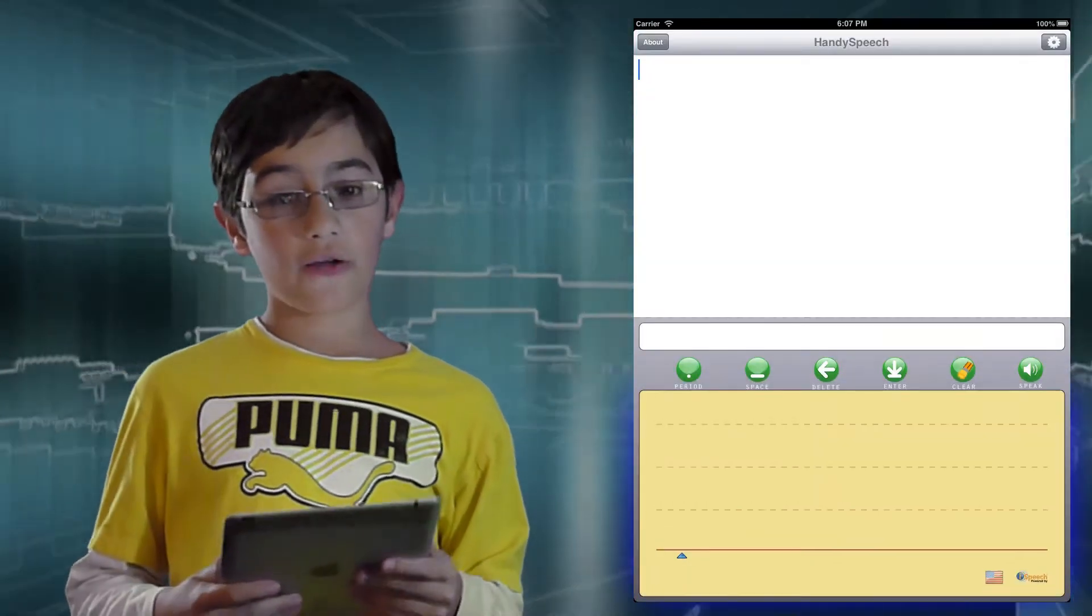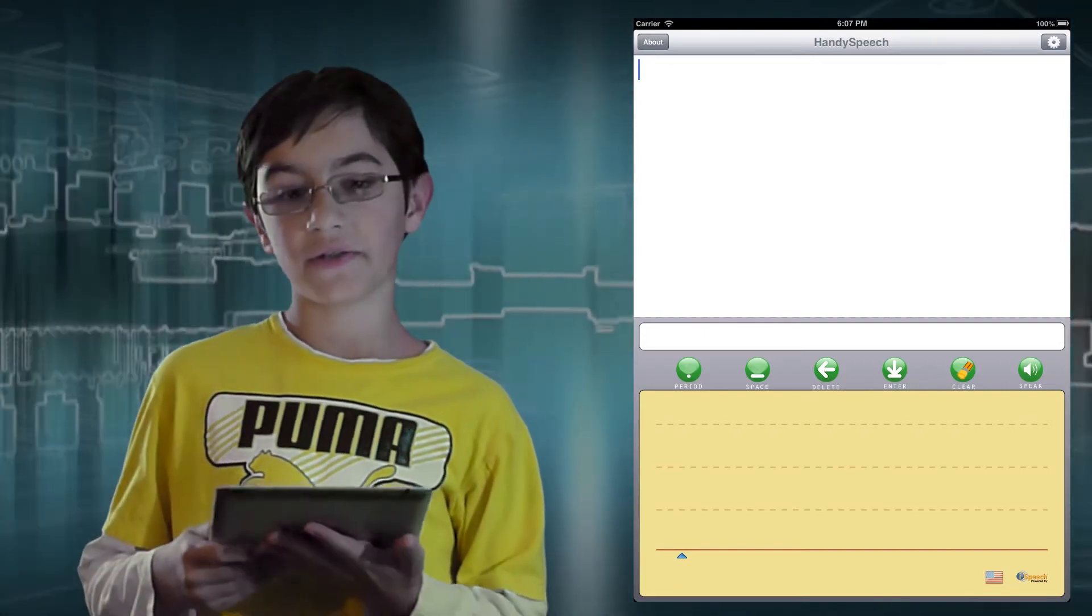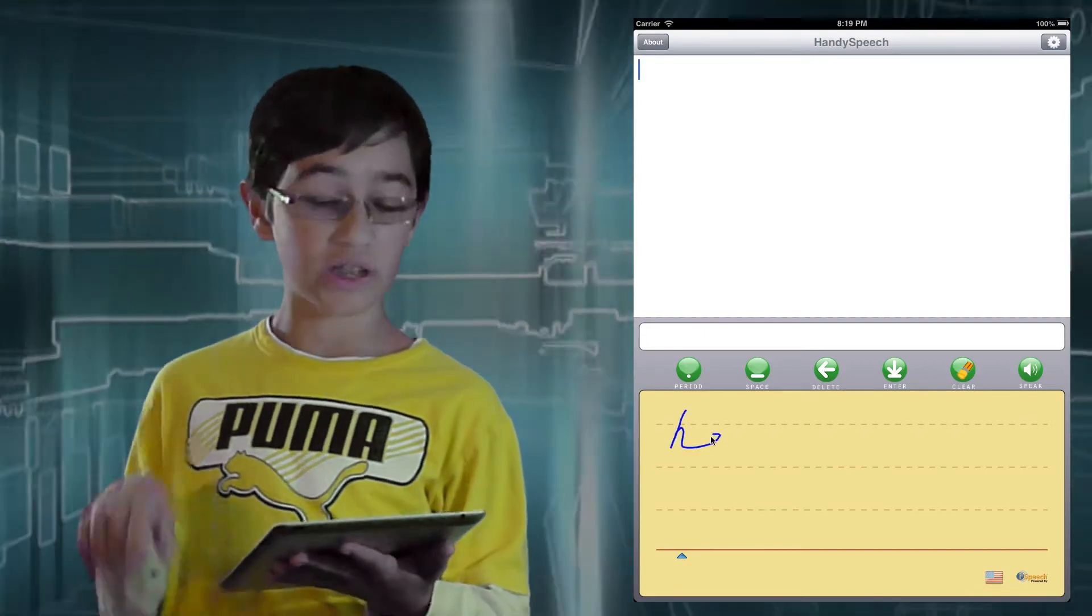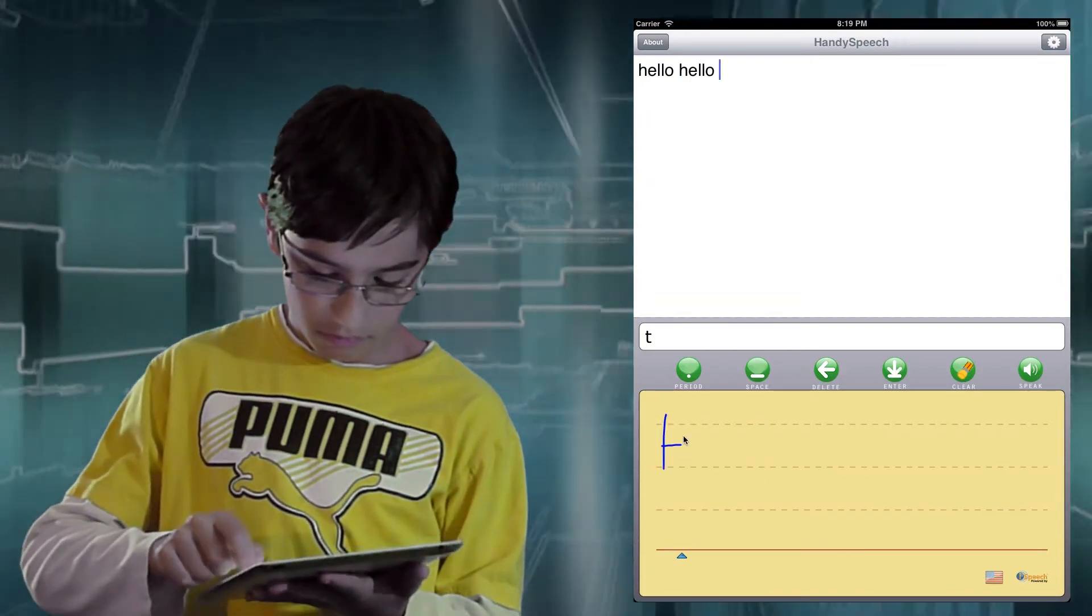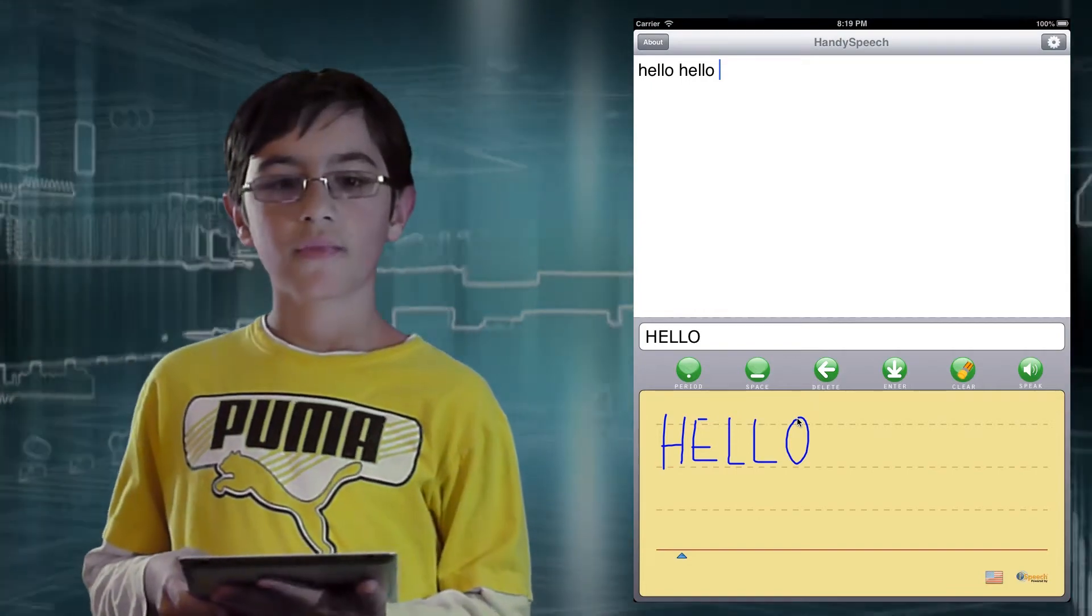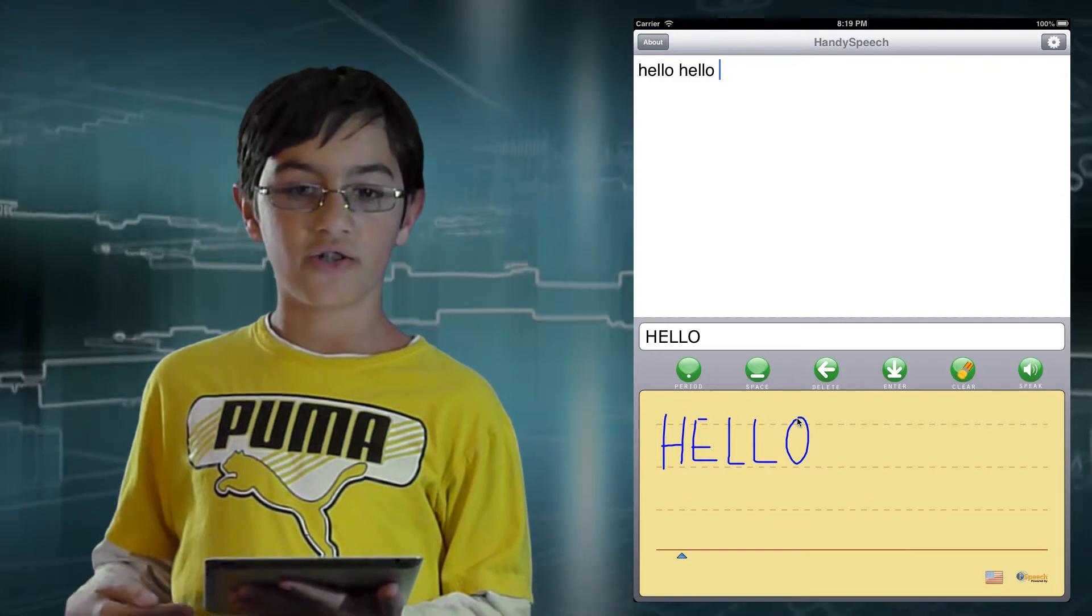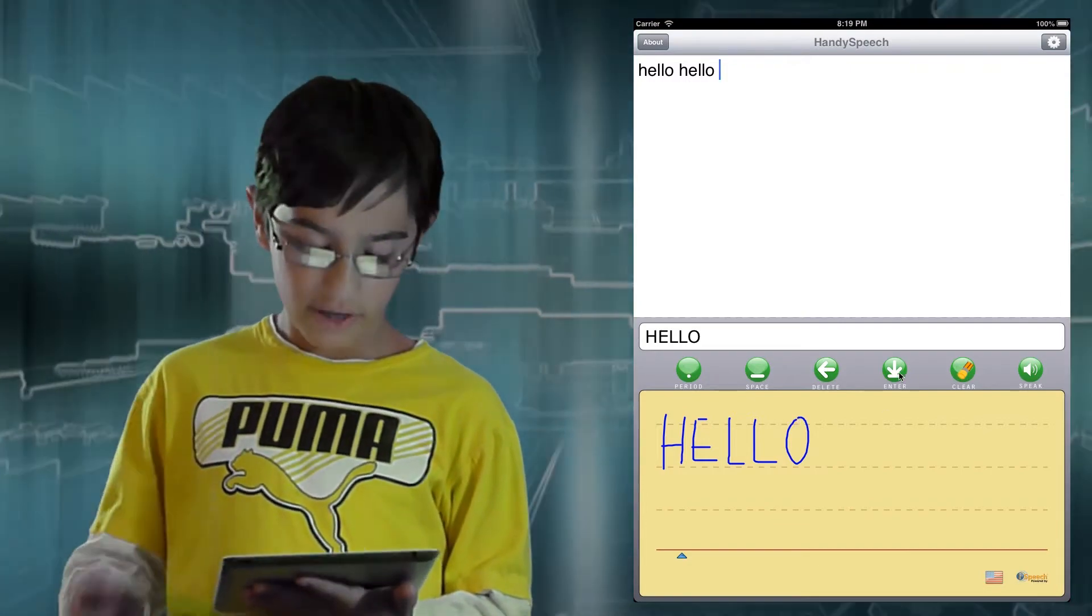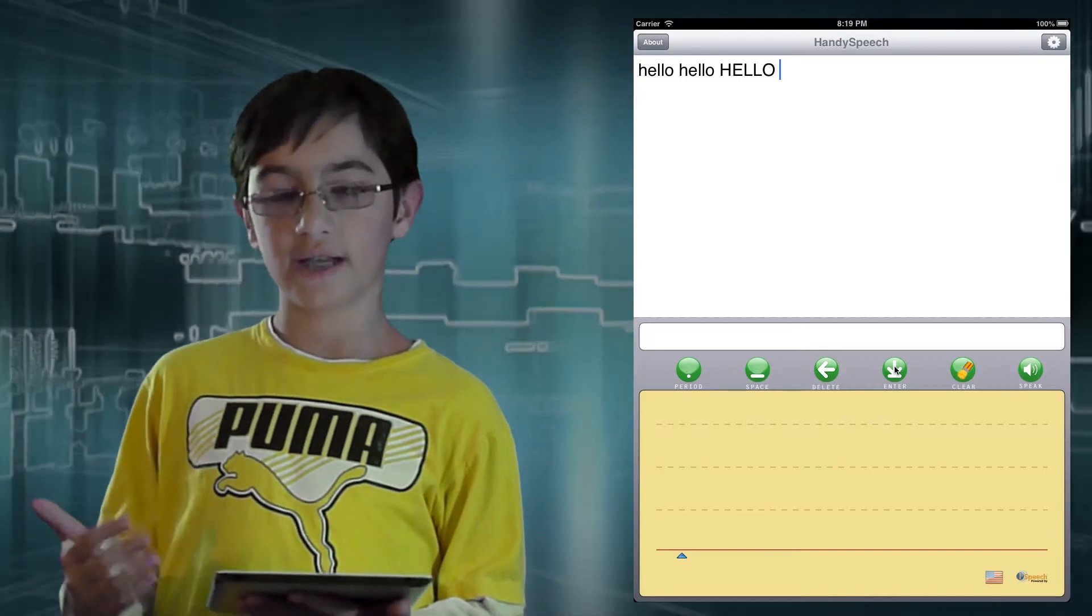To enter text, I will write on the input panel between the lines. Preferred handwriting style can be used. Let me try to use all of them. Well, as best as I can. Now, when I am done, I touch the Enter button to insert the text at the cursor location. You can also touch the Speak button to insert the text and speak.